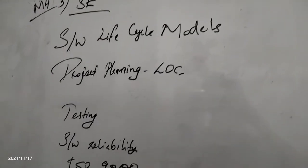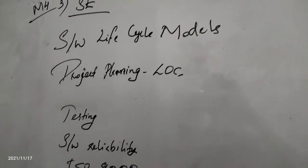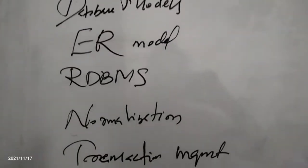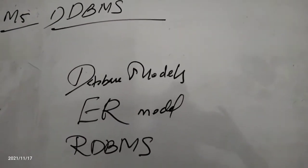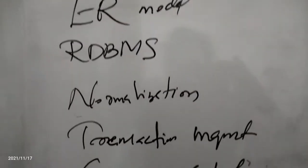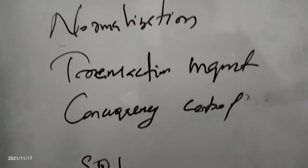Software engineering includes software lifecycle models, project planning, log testing, software reliability, and ISO 9000. Database topics cover normalization, RDBMS, DDL, transaction management, concurrency control, ER model, SQL, and Codd's second rule.